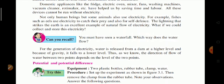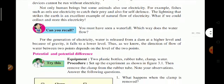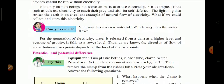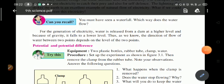For the generation of electricity, water is released from a dam at a higher level and because of gravity it falls to a lower level. Thus, as we know, the direction of flow of water between two points depends on the level of the two points. This brings us to the topic of potential and potential difference.